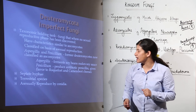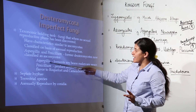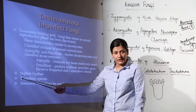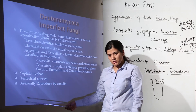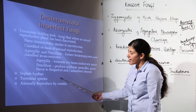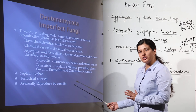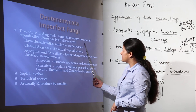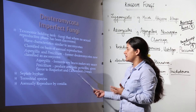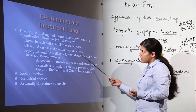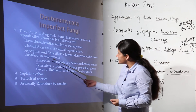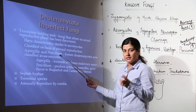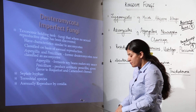Imperfect fungi are considered Ascomycetes whose sexual reproduction has not yet been discovered — only asexual methods are seen. If at any moment they are found producing basidiocarps they would be classified into Basidiomycetes, and if producing ascocarps then into Ascomycetes. Most are in close relation with Ascomycetes. They have septate hyphae, are terrestrial species, and reproduce asexually by conidia. Examples are Aspergillus and Penicillium, which were earlier part of Deuteromycetes.